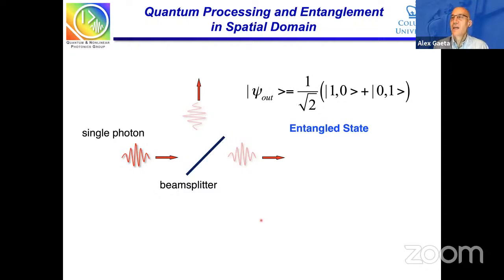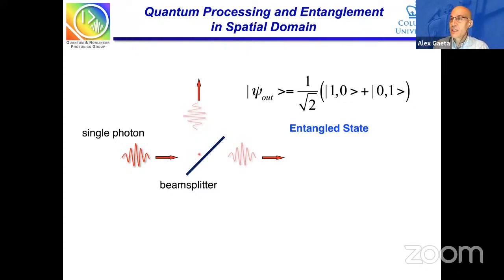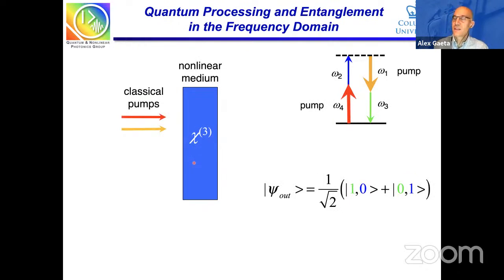The idea is to get much more complicated forms of entanglement, but this is the basic one. Doing this in the spatial domain is pretty straightforward, and you can put beam splitters or waveguide couplers on a chip. But there are other domains — polarization entanglement, temporal entanglement, and so on. What I'm going to talk about is doing this type of quantum entanglement and quantum information processing in the frequency domain, which is a little different from what some of you may have seen.